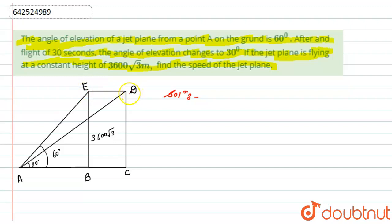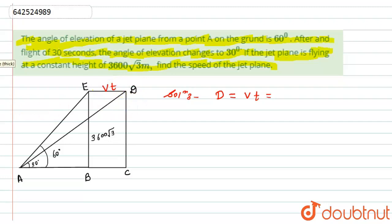ED is the distance covered by the jet plane while flying in the sky, covered in 30 seconds. As we know, distance equals velocity multiplied by time. So we can write ED as v×t, where v is the velocity of the plane and t is the time taken to travel from E to D.